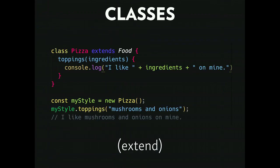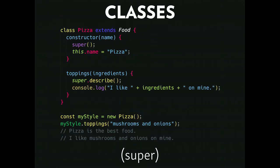You can create subclasses and extend parent classes. 'class Pizza extends Food' with a 'toppings' method. 'const myStyle = new Pizza', 'myStyle.toppings()' gives mushrooms and onions. There's a 'super' keyword that refers to the parent class — in this case Food. In the constructor, 'super' references Food's 'this.name', setting it to pizza. In the toppings method, 'super.describe()' calls Food's describe. So 'myStyle.toppings()' runs 'super.describe()' — 'Pizza is the best food' — then logs 'I like mushrooms and onions on mine.'